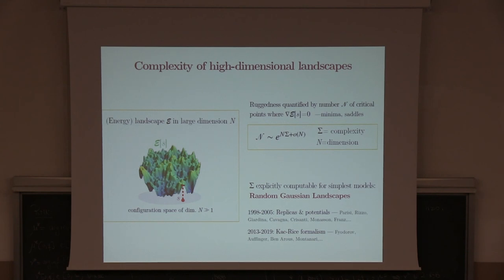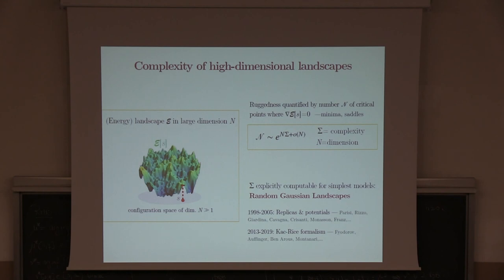The general framework is as follows. We have a landscape — in my case an energy landscape, but it could be some generic functional depending on very many variables encoded in this vector s, living on a configuration space of very large dimension N. This is the large parameter in the problem. This landscape can be very complicated, non-convex, with an exponentially huge number of stationary points, with a coefficient that is the complexity, which for the simplest examples — random functionals with Gaussian statistics — can actually be computed explicitly.